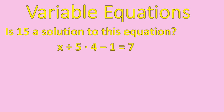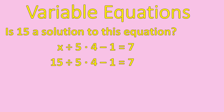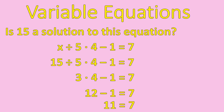Let's do a little bit of practice with a variable. When we have an equation like x divided by 5 times 4 minus 1 equals 7, we have that equal sign — it's an equation. And we're asking: is 15 a solution to this equation? That means if we put the number 15 in for x, is the equation balanced? Our first step is to substitute 15 in for x. We start at the left moving to the right with multiplication and division. 15 divided by 5 is 3, and 3 times 4 is 12. Then we do subtraction: 12 minus 1 is equal to 11. But 11 is not equal to 7, so 15 is not the solution to this equation.